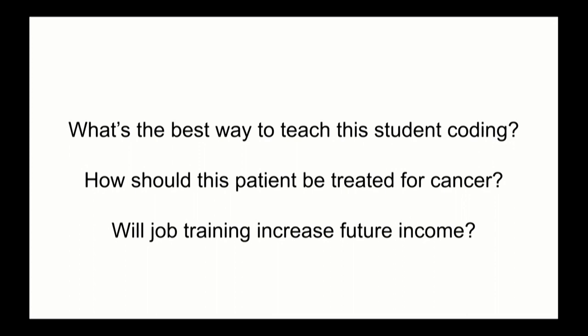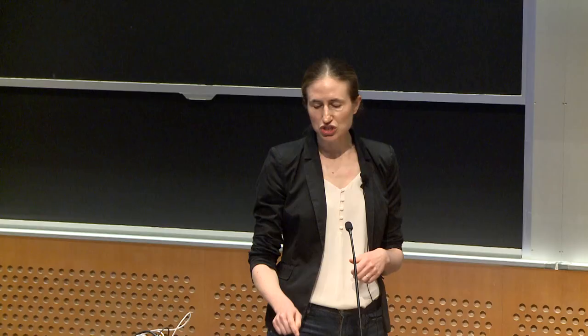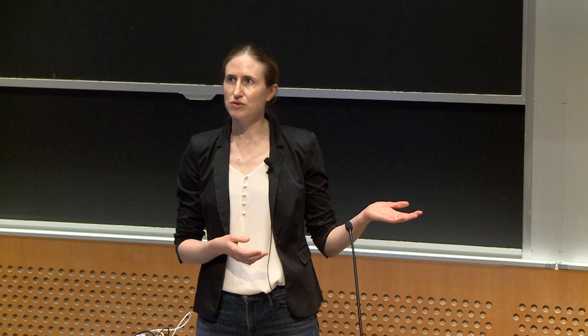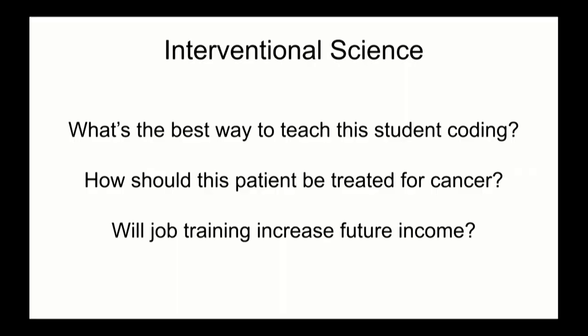As a society, we often ask many sorts of interventional questions, like what's the best way to teach a student coding, how should we treat a particular patient for cancer, or is job training going to increase future income? While maybe 100 or 200 years ago we might have approached these questions through hunches or our own intuition or perhaps personal anecdotes, at least over the last 50 years we've moved to a much more scientific approach. The rise of things like evidence-based medicine is this approach to interventional science where we want to answer these really important societal questions through the scientific method. The typical scientific method is to think about a particular intervention and then taking two different groups, often known now as an A-B test, and seeing which intervention works well.